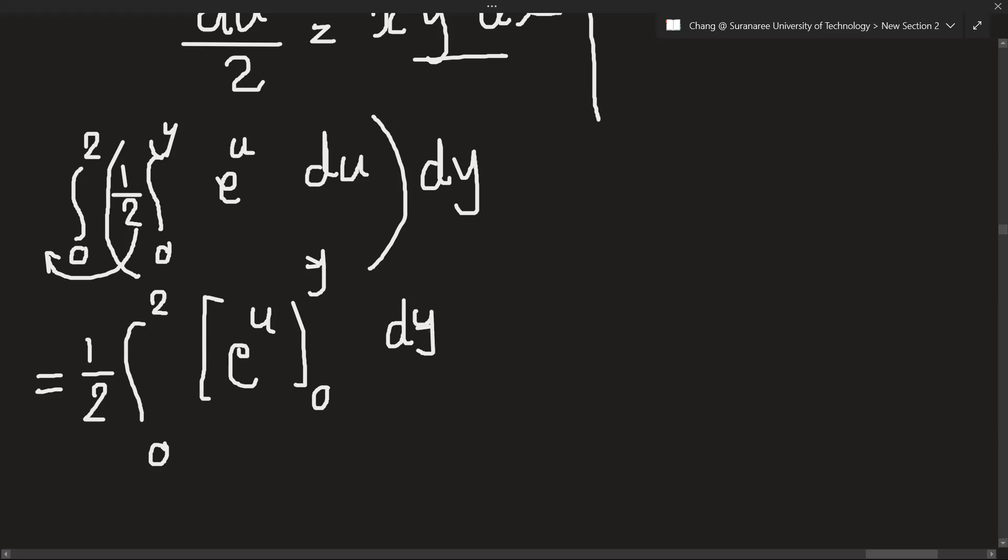Let's insert the value of u. So 0 to 2, e^y minus e^0. E^0 is 1, right? Into dy.